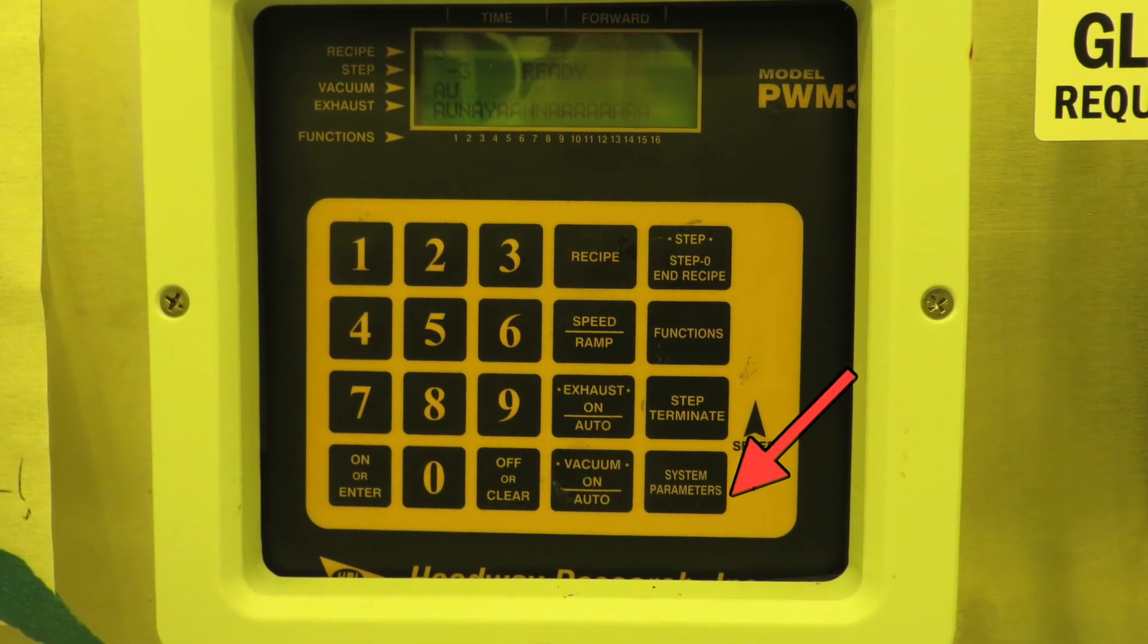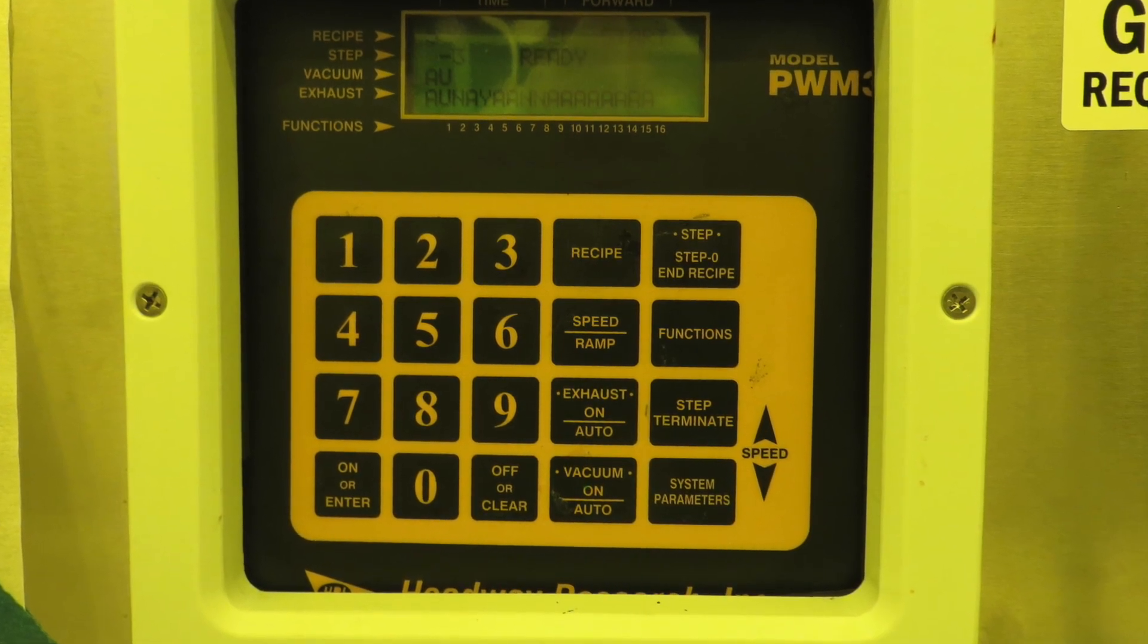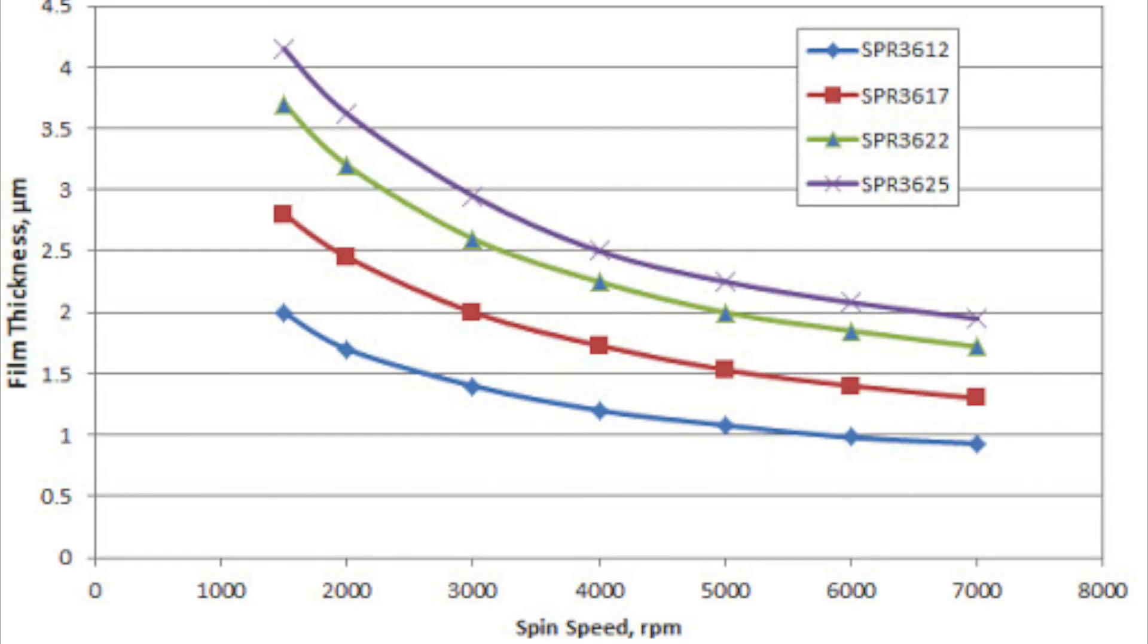SPR 3612, for instance, in the blue curve, spins out to about 1.2 microns at 4000 RPM. Going slower increases the thickness and going faster decreases the thickness.